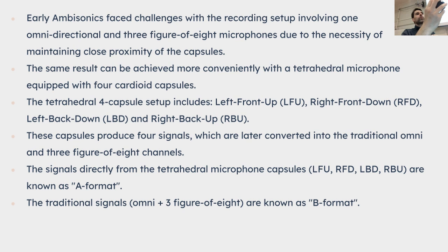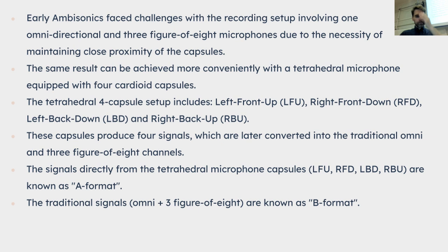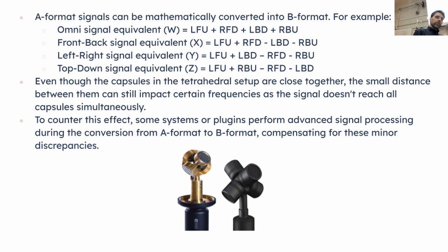We have to transform A format into B format — we have to do some calculations to actually encode it. You can derive the omnidirectional signal W by just adding up all the different capsule captures. Then we get front/back, left/right, top/down with some addition and subtraction — super simple math. But when capsules are so close to each other, you need to do some filtering, which is what is usually done in A-to-B format converters.